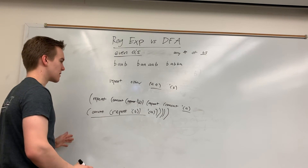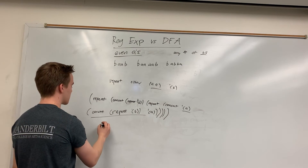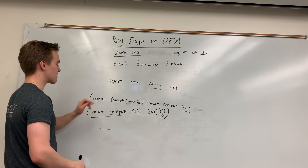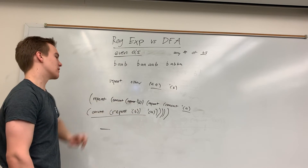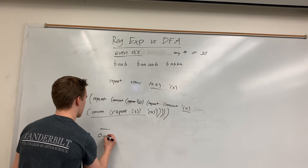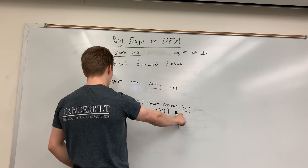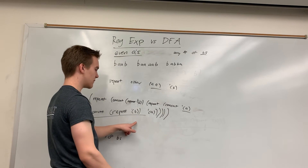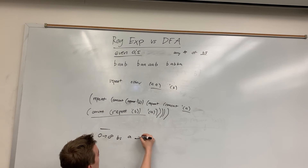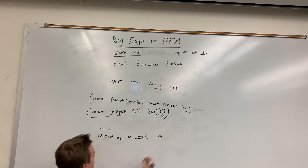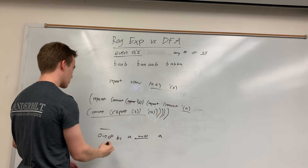Let's see if it generates some good stuff. This can generate an empty string because repeat can happen zero times. If this repeat happens once, it's going to concat any number of B's — zero to infinity B's — followed by zero to infinity repetitions of A, followed by zero to infinity B's, followed by A. So: A, any number of B's, then A, and then this whole thing can repeat.